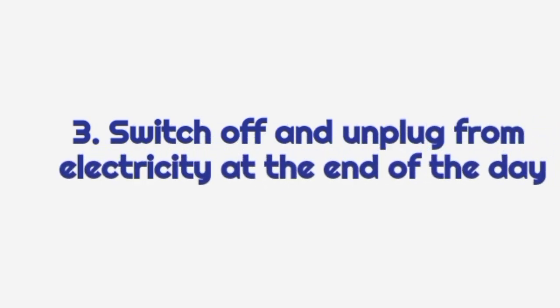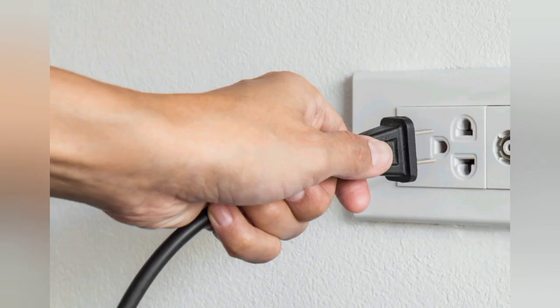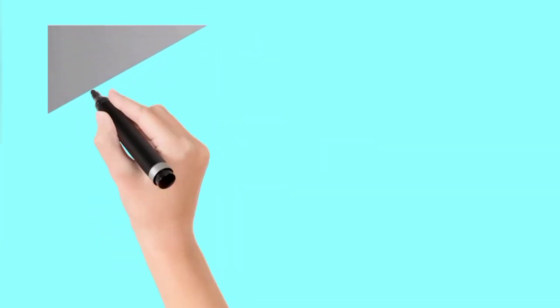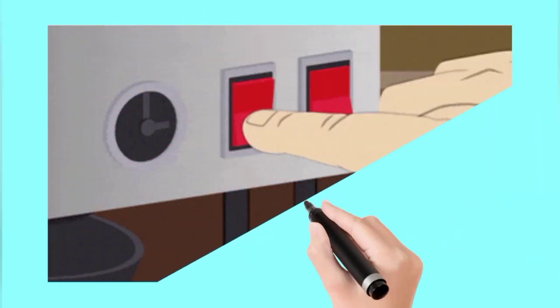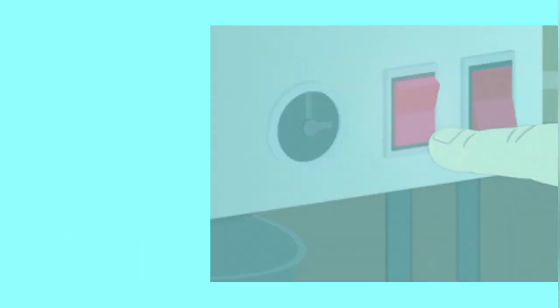The next way we can care for office equipment is to switch off and unplug from electricity at the end of the day. This is very important to avoid fire outbreak and damage of office equipment. When we do this regularly, it will increase the lifespan of the office equipment — in other words, it will last longer in the office.